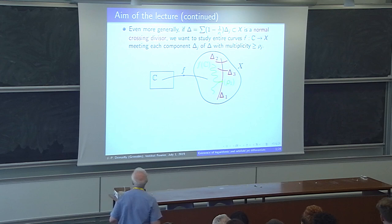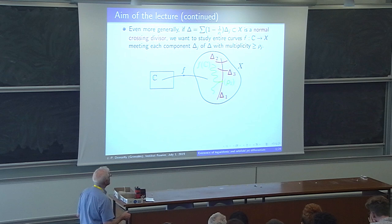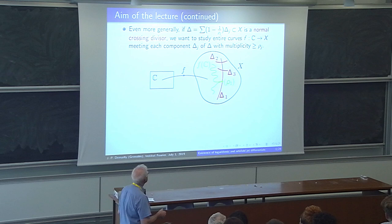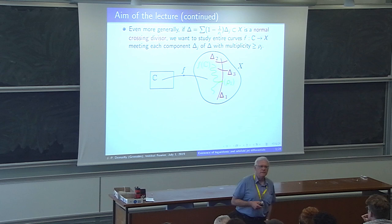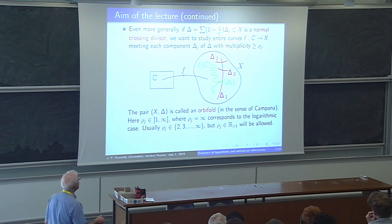Now you look at curves f that can hit some of the components. But if the curve hits a component, say delta_1, then you require that there is a multiplicity of at least rho_1. Of course it's more interesting when rho_1 is an integer. You refer to the pair (X, delta) as an orbifold in the sense of Campana, assuming delta to be a normal crossing divisor.